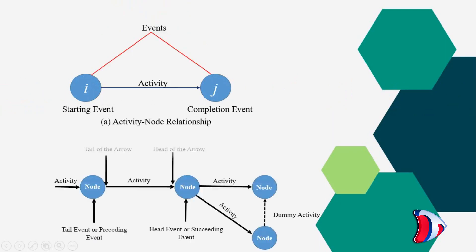Let us understand the activity node relationship. In network diagram, arrows represent activities and circles the events. The length of an arrow is of no significance. Each activity should be represented only by one arrow and must start and end in a circle called event.